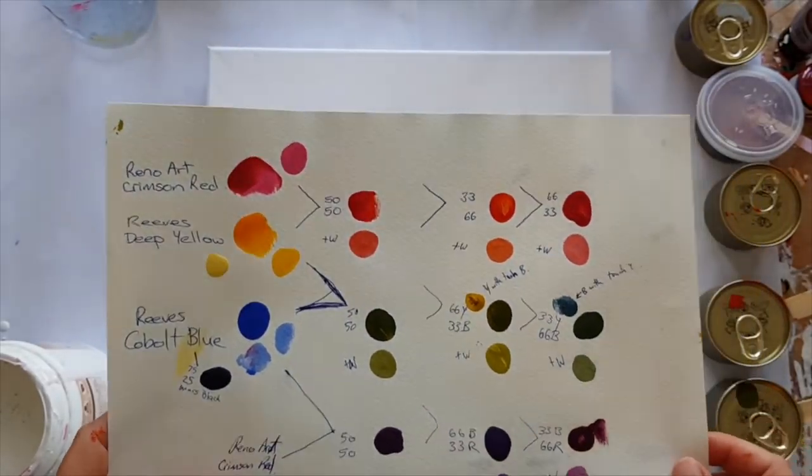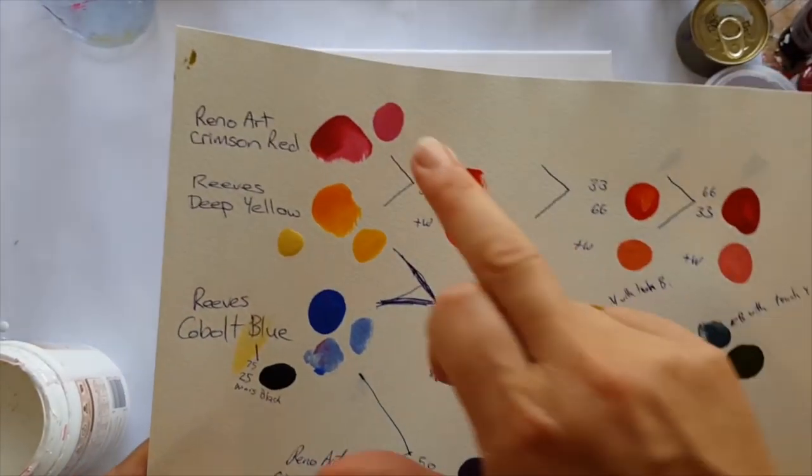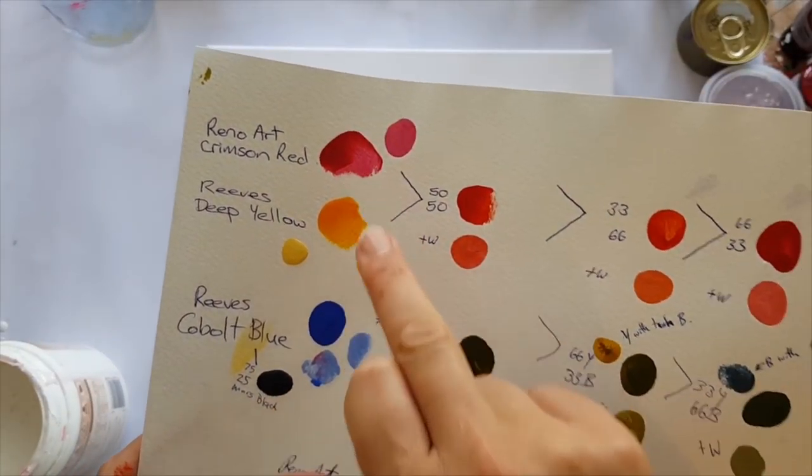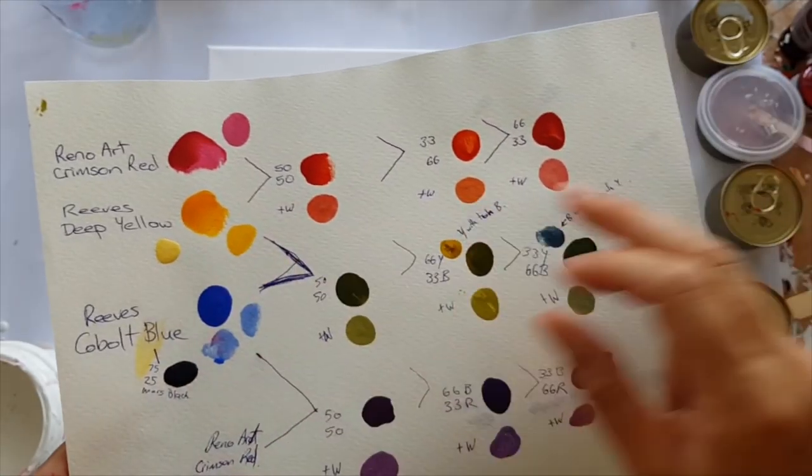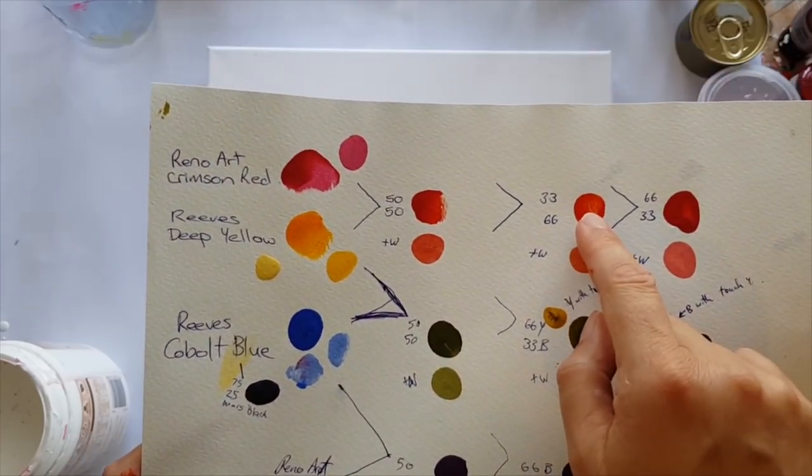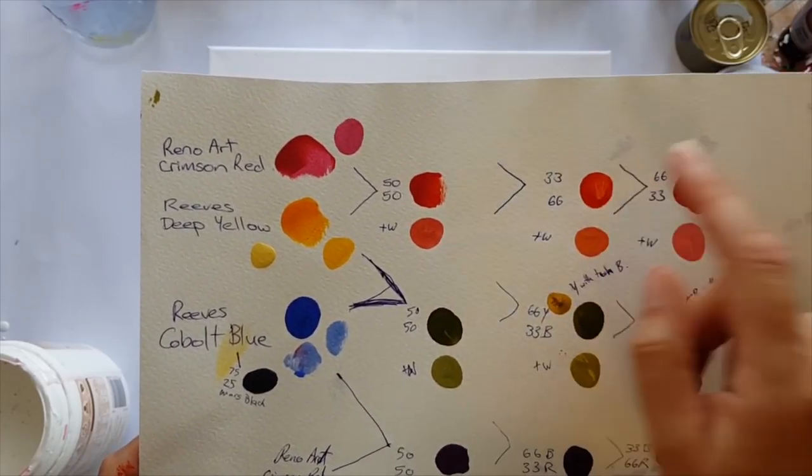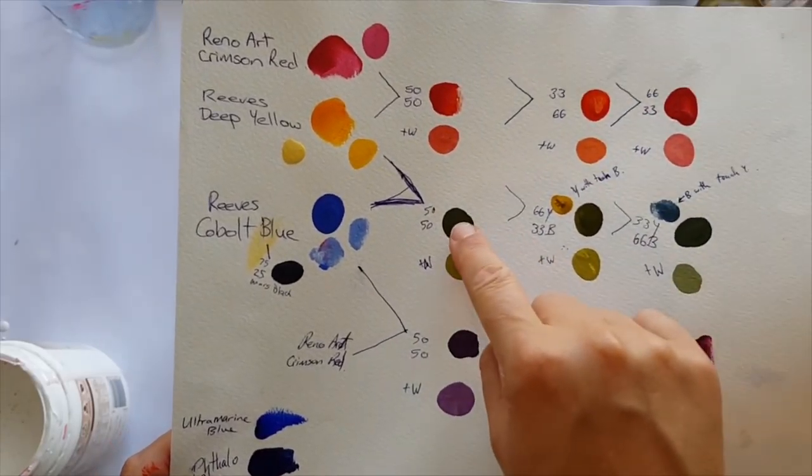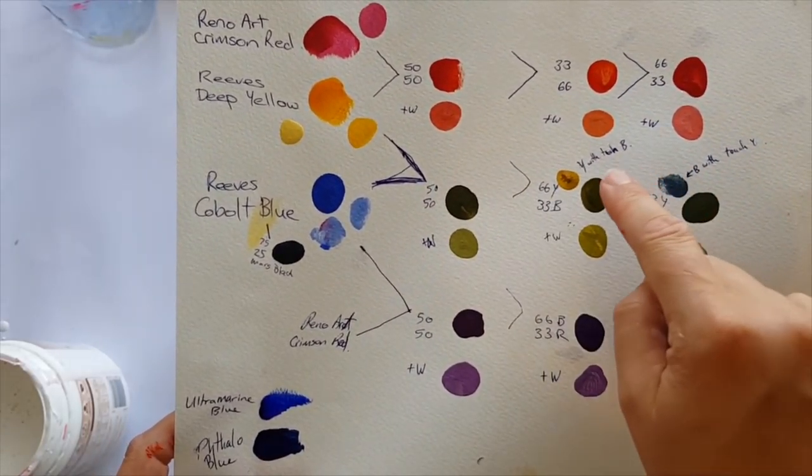We've got the Reno Art crimson red mixed with the Reeves deep yellow. I'm going to go with the 50/50 and the 33% red, 66% yellow.